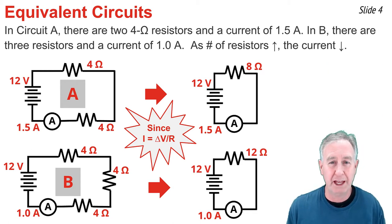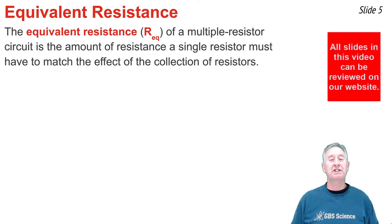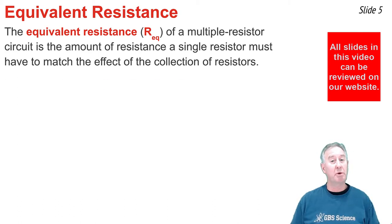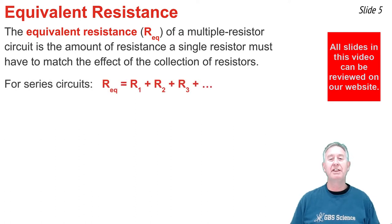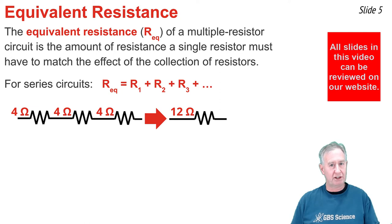Since the current in a circuit is the battery voltage divided by the overall resistance, circuit A would have an equivalent circuit where the two 4-ohm resistors are replaced with a single 8-ohm resistor, leading to a current of 1.5 amps. For circuit B, the equivalent circuit replaces the three 4-ohm resistors with a single 12-ohm resistor, leading to a current of 1.0 amps. The equivalent resistance of a multiple-resistor circuit is the amount of resistance a single resistor must have to match the effect of the collection of resistors. For a series circuit, that value is calculated by adding together the individual resistance values.